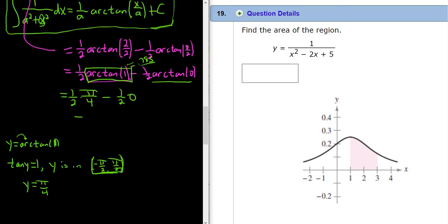Arctan of 0 is 0 because the tangent of 0 is 0. So this is 0. You can work it out using the same argument. Actually, this one, your calculator will just give you. It will just say 0. And this is pi over 8.